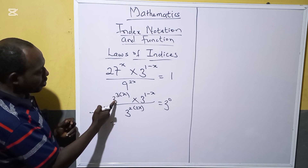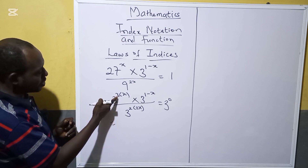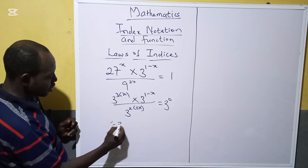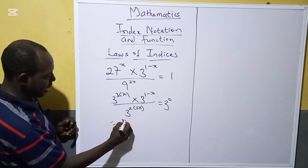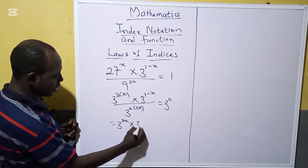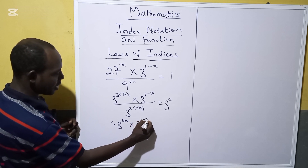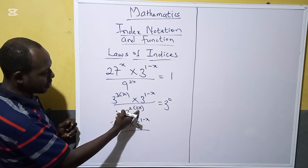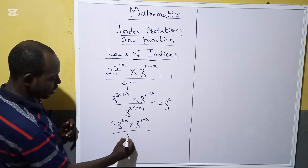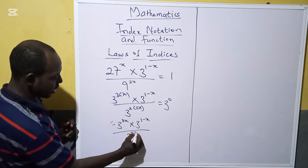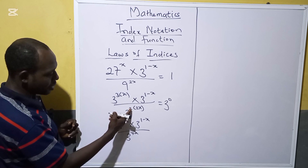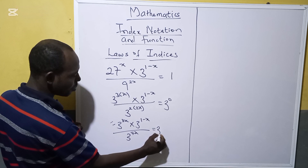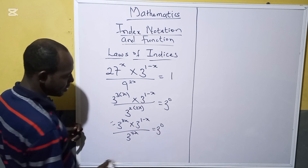Remember that the power law says you can multiply these two powers together. So we have 3 raised to the power 3x, multiplied by 3 raised to the power 1 minus x, divided by 3 raised to the power 2 times 2x, which gives me 3 raised to the power 4x. Using the power law, we can multiply these two powers. That equals 3 raised to the power 0.